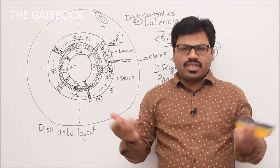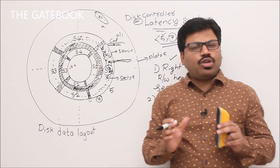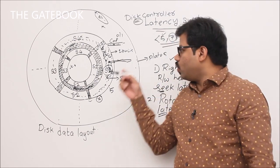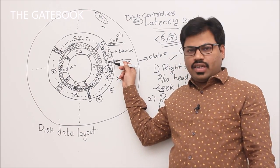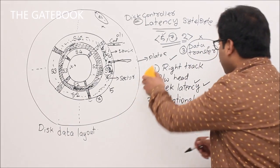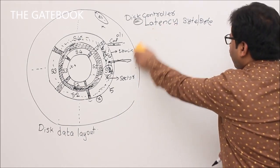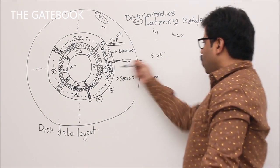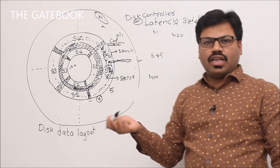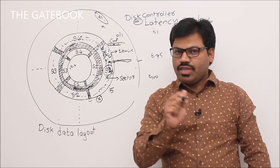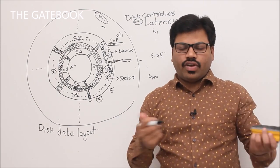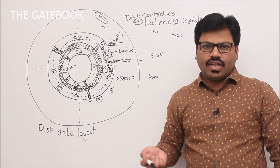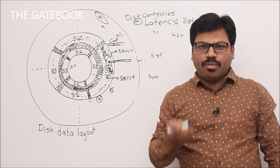Once a track is completely filled, move to the immediate next track rather than jumping randomly. If you write on track 1, then track 100, then track 20, the read/write head moves excessively, wasting time. The best design is to write sequentially: fill one track, then the next, then the next — minimizing head movement.